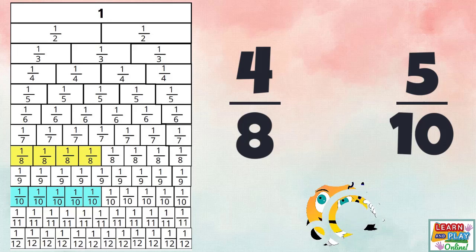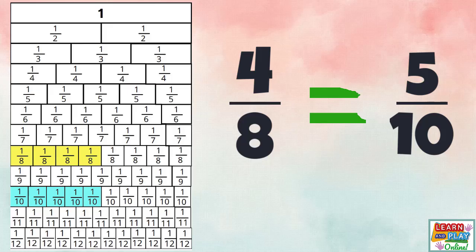That's right, they are equivalent fractions, so we use this symbol. And we read the number sentence as four eighths is equal to five tenths.